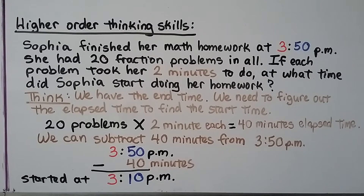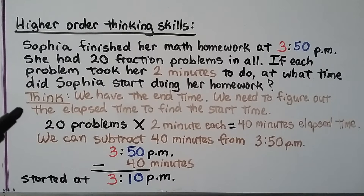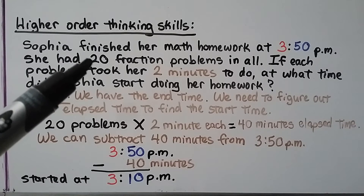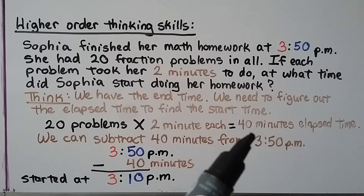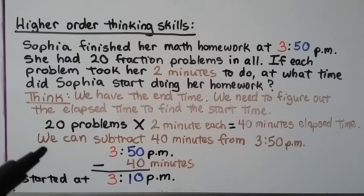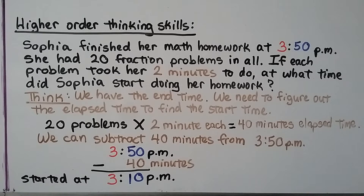Now let's try some higher order thinking skills. Sophia finished her math homework at 3:50 p.m. She had 20 fraction problems, and each problem took her 2 minutes. At what time did Sophia start doing her homework? We have the end time of 3:50 p.m. and need to figure out the elapsed time to find the start time. We multiply 20 problems times 2 minutes each — that's 40 minutes elapsed. Subtracting 40 minutes from 3:50 p.m., the hour stays the same, so she started at 3:10 p.m. Sometimes we can use subtraction to solve elapsed time problems.